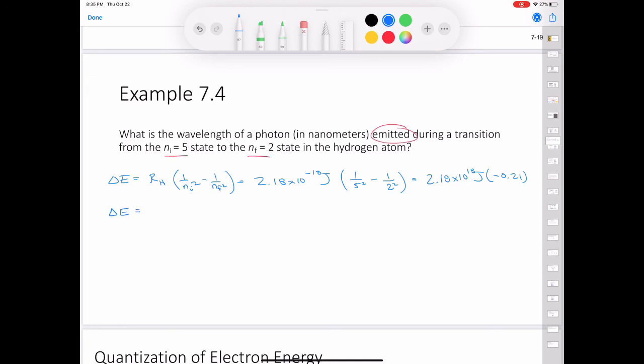We can plug in some numbers. We have our Rydberg constant, 2.18 times 10 to the negative 18 joules. Our n initial, so we have 1 over 5 squared, so that's 1 over 25. 1 over n final, so 1 over 2 squared, so that's 1 over 4. That's going to equal 2.18 times 10 to the negative 18 joules, multiplied by negative 0.21. And so that gives us a delta E, which is equal to negative 4.58 times 10 to the negative 19 joules. The reason we have a negative sign for our change in energy is because this is an emission. And so when we calculate the wavelength, we're just going to omit the negative sign.